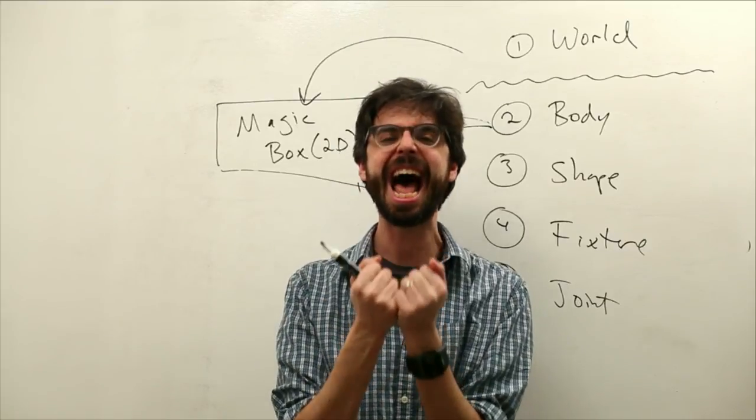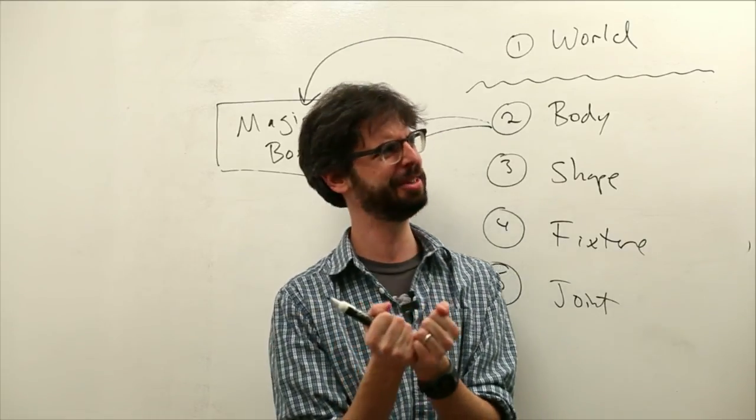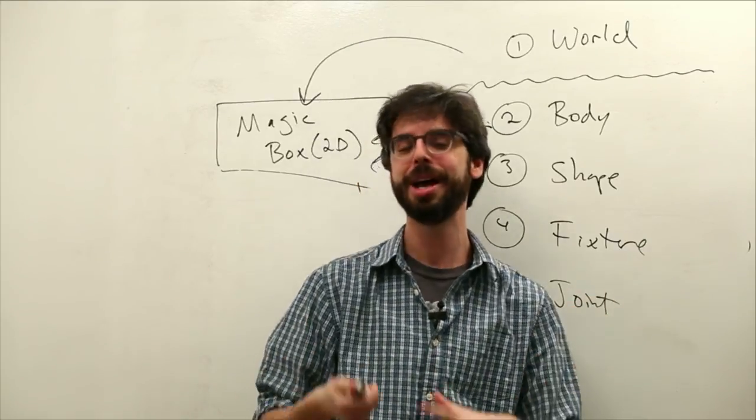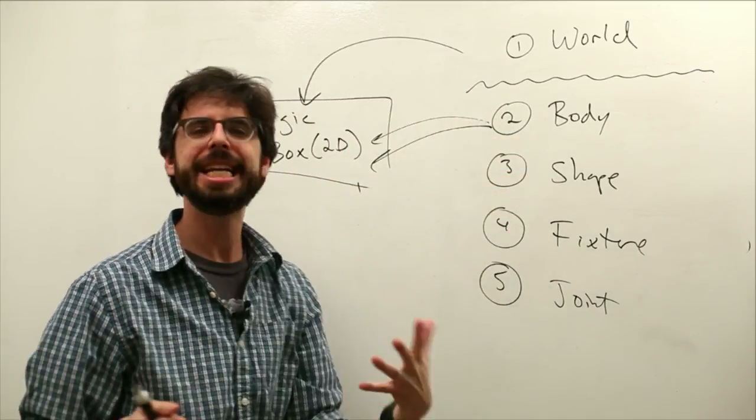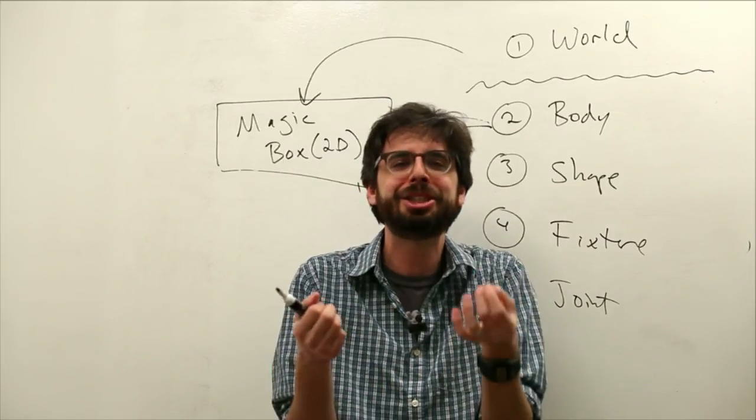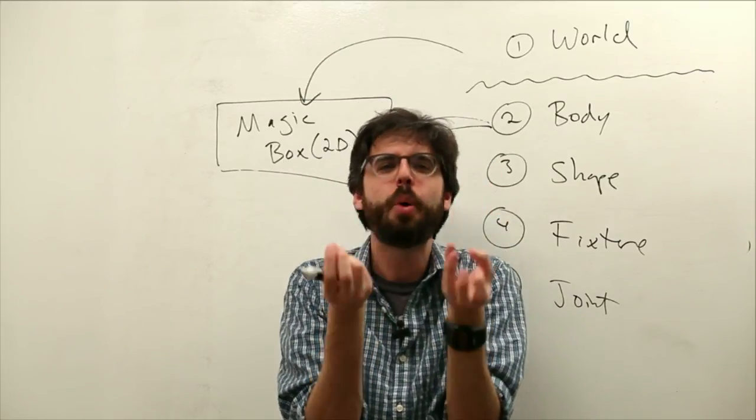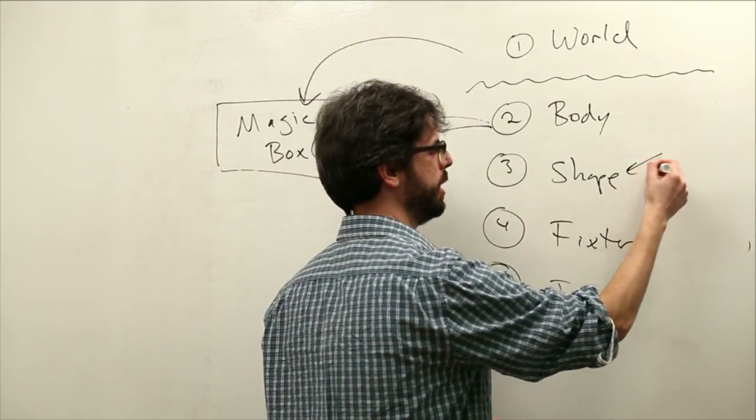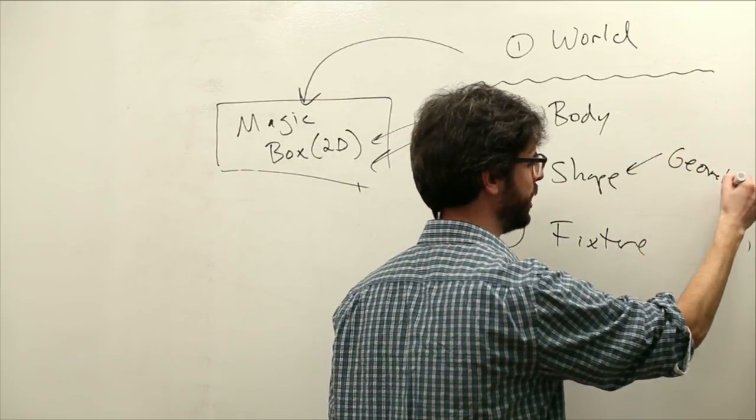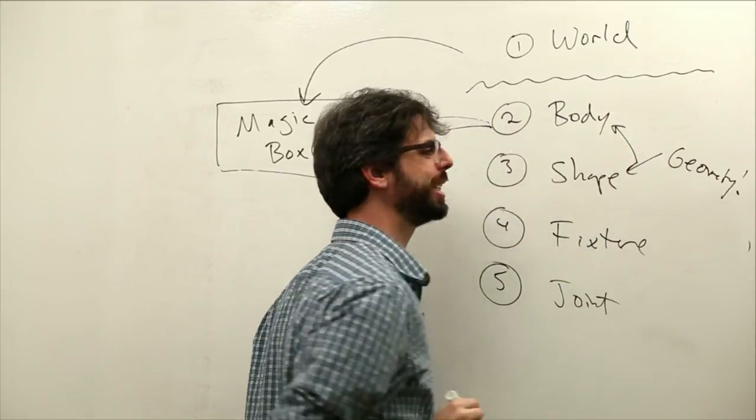The body is the central element that moves around the screen. It is the thing that has the physics. Has the physics? Can something have the physics? Anyway, it's the sort of central element. The interesting thing about a body is it is nothing. It's emptiness. It's just like this empty point that's moving throughout the screen. A shape is what actually has geometry.